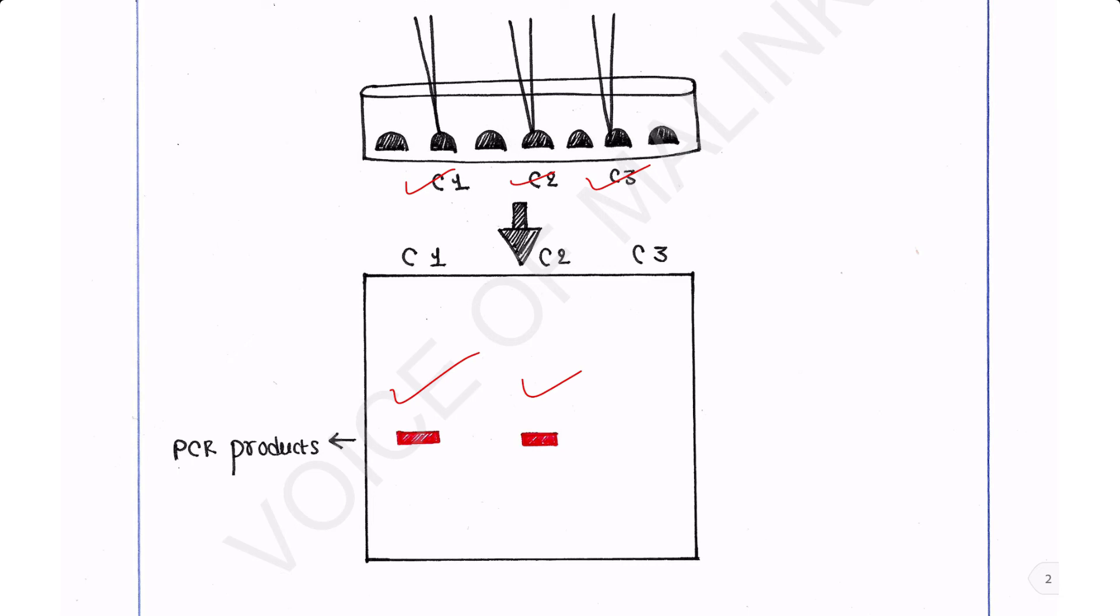We see bands from two colonies: colony 1 and colony 2, whereas colony 3 is negative. It does not yield any amplified PCR product, thus no band is observed in the gel.